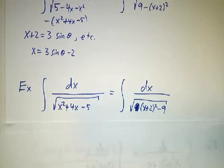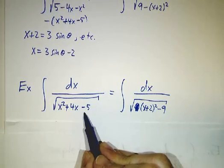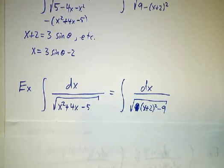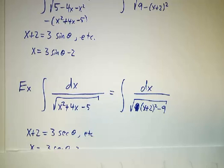Finally, if you had an x squared plus 4x minus 5, then we would have gotten the square root of x plus 2 squared minus 9. And you would have said x plus 2 is 3 sec of theta.